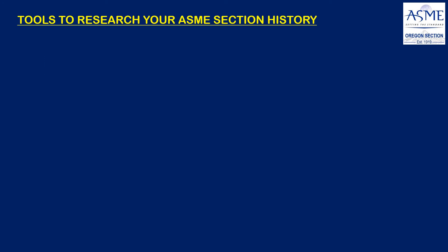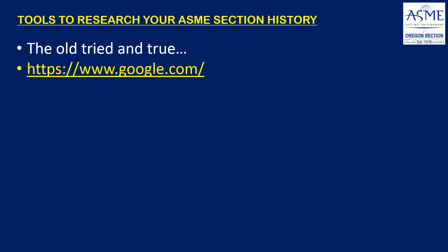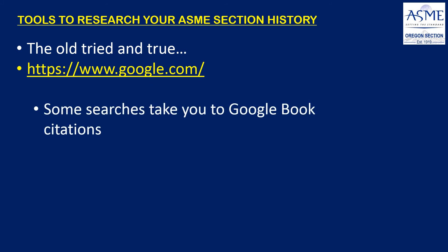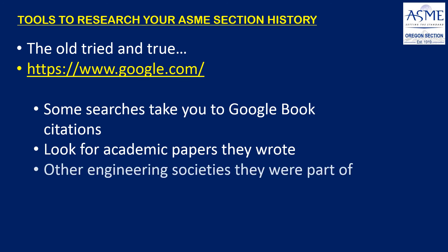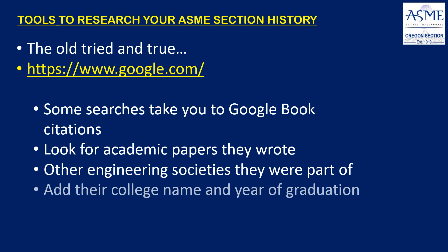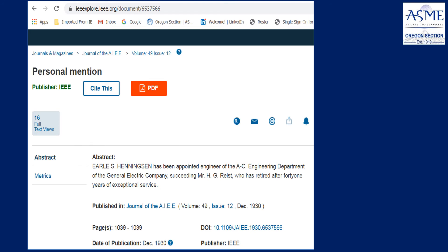Google.com is definitely a good search engine because it can take you to Google Book citations and Google Scholar — academic papers they wrote and different parts of books in the public domain that have been scanned. It'll also be good because you can see if they were also involved in other engineering societies. Include the name of their college or their year of graduation when you do the research too — that will possibly give you a connection to an obituary or biography.